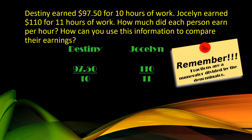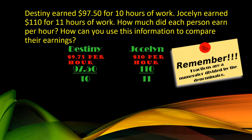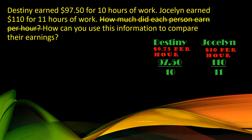Remember, fractions are a numerator divided by a denominator. When I divide $97.50 by 10, I get $9.75 per hour, which would be the rate Destiny earns money. I want to take Jocelyn's and do the same thing — $110 divided by 11 — and I get $10 per hour. We've already answered how much each person earns per hour.